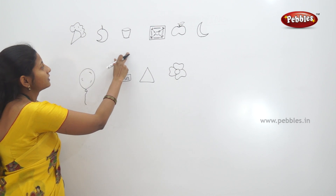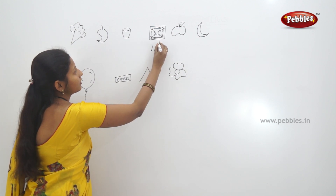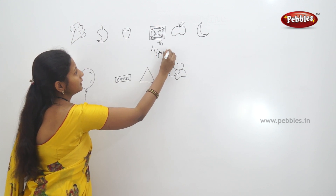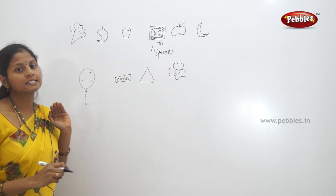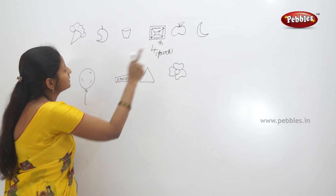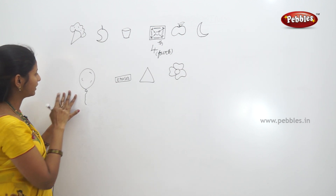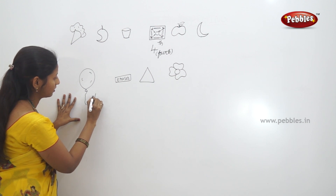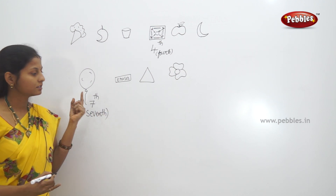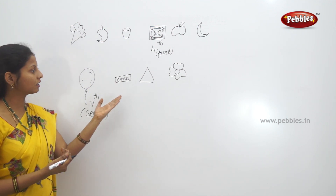Now I have drawn ten pictures on the board. For a perfect understanding of ordinal numbers, here is another example. Each picture has a position. Carrom board — what position is it in? First, second, third, fourth. Carrom board is in the fourth place. Fourth — F-O-U-R-T-H. Similarly, the seventh place has a picture. One, two, three, four, five, six, seven — the seventh place has a balloon. So balloon is in the seventh position. S-E-V-E-N-T-H.